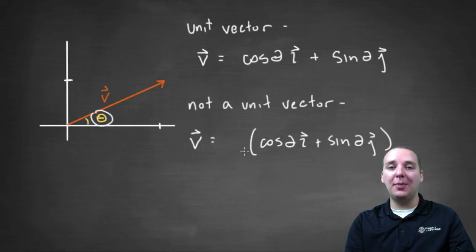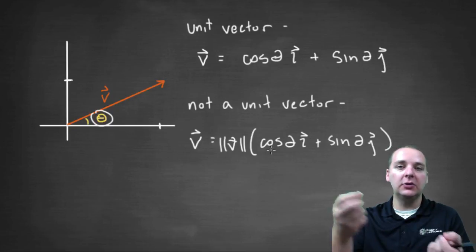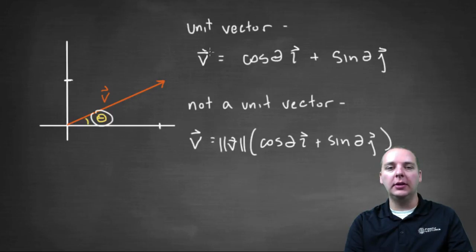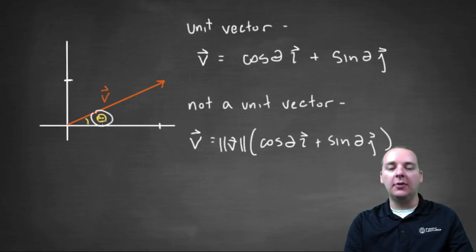And then we'll multiply that by a scalar of whatever magnitude we want the vector to have. So if we wanted to have a magnitude of six, we'll just multiply that unit vector by a scalar of six, and it'll scale it out appropriately. So this is how we write a vector given the magnitude of a vector and the angle of elevation from the positive x-axis.